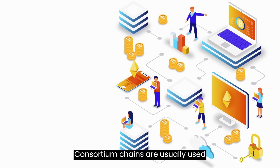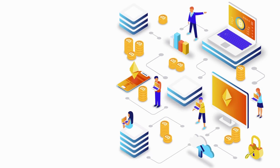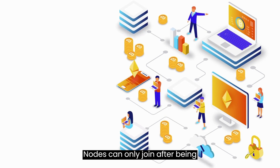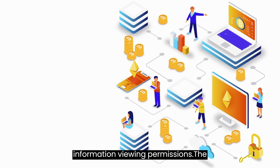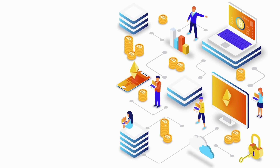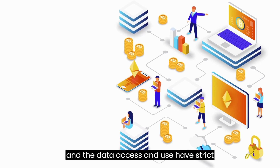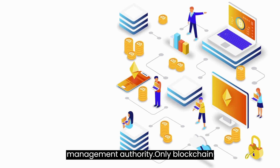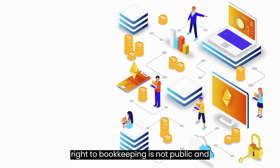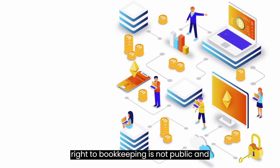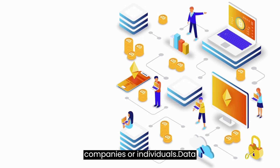Consortium chains are usually used between government agencies, commercial organizations, and companies. Nodes can only join after being authorized through the access mechanism, and different nodes have different information viewing permissions. The private chain is fully closed — participating nodes are limited, and data access and use have strict management authority. Only blockchain technology is used for bookkeeping, the right to bookkeeping is not public, and only internal transactions are recorded, exclusively enjoyed by companies or individuals.